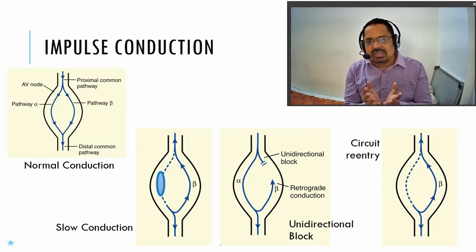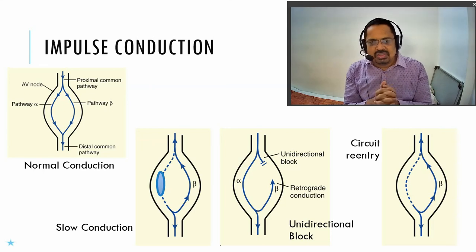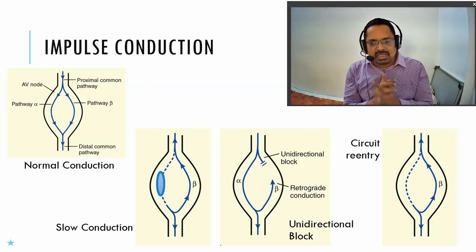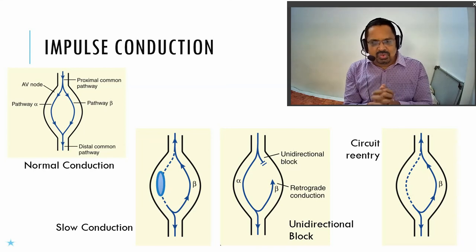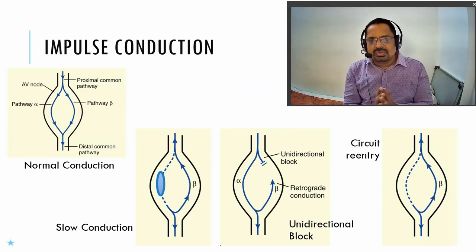This is what happens whenever there is abnormality in impulse conduction — slow conduction, unidirectional block, or circuit re-entry — representing the pathophysiology of arrhythmia. In the next parts we will continue. Thank you very much.